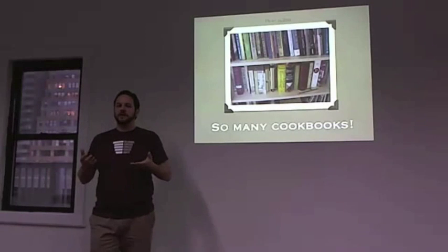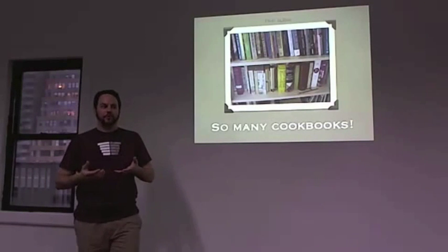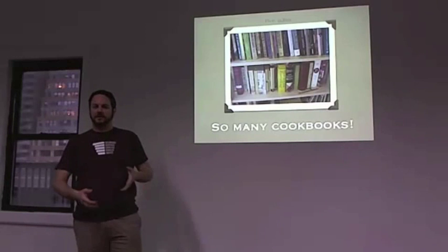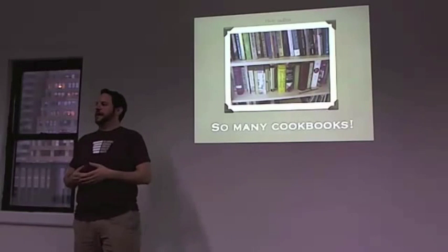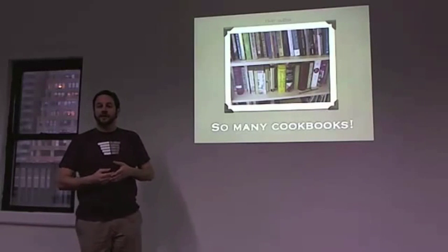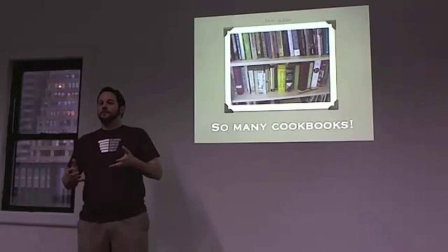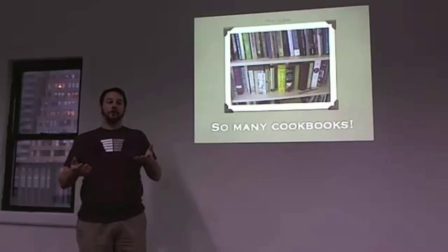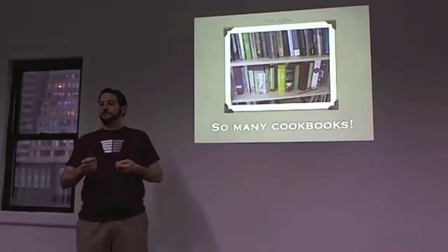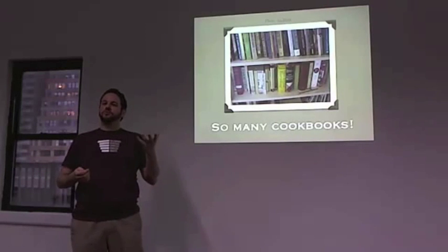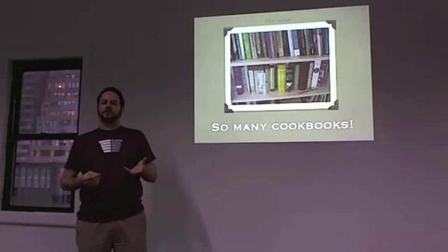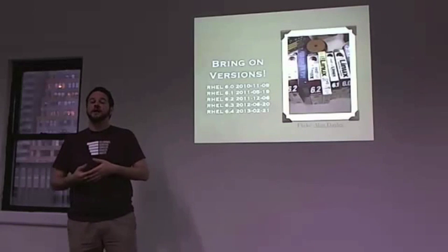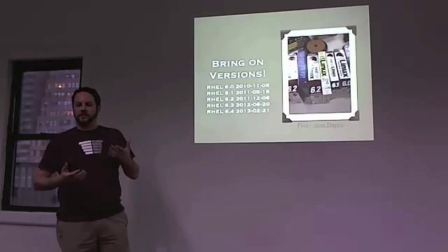In the Chef world, you could theoretically write one cookbook that deploys everything in your stack. That's really a bad idea, because now you have one big piece of code and you don't know what it does, and if you change it, it affects everything. So you put stuff in smaller cookbooks, you leverage other people's cookbooks like libraries, and there are so many of them that it's hard to know what's going on.